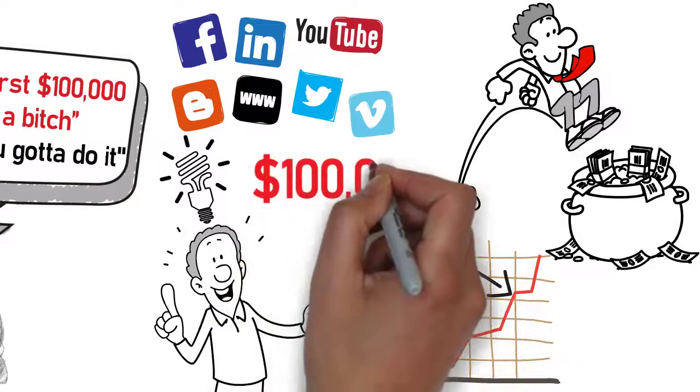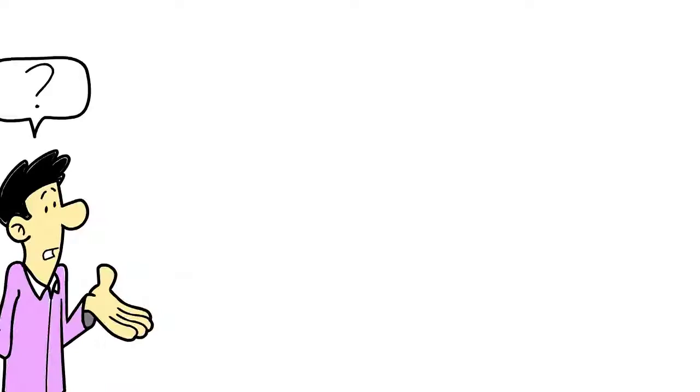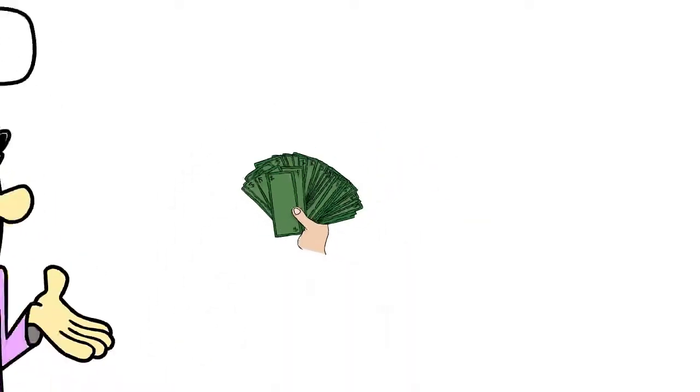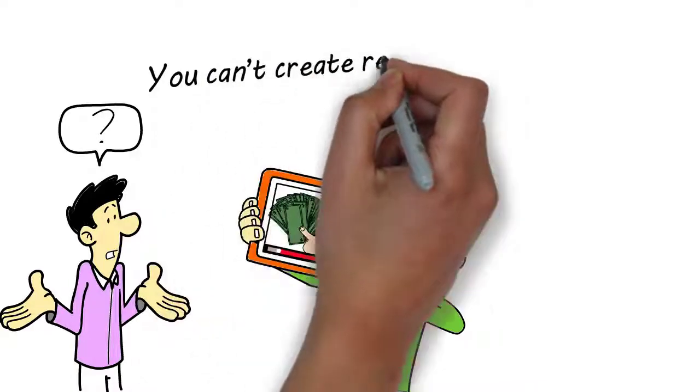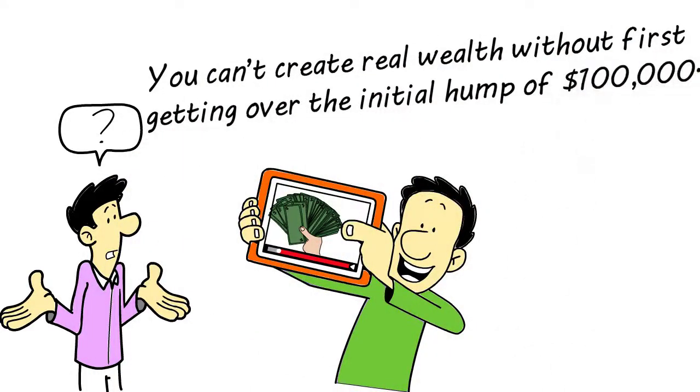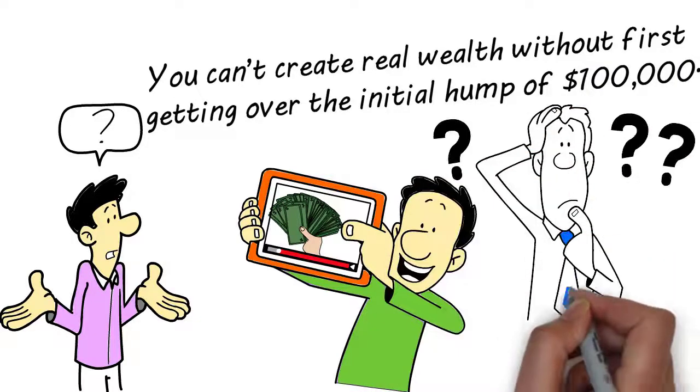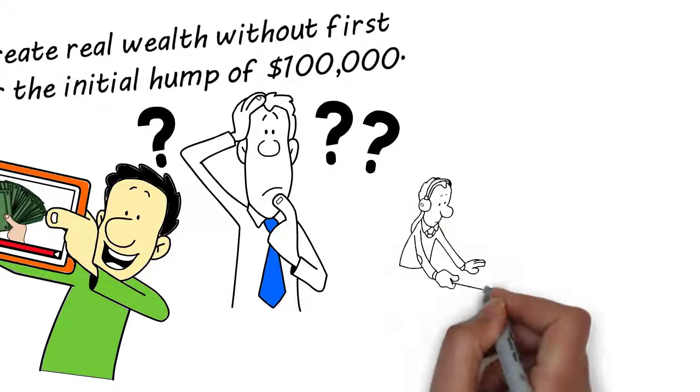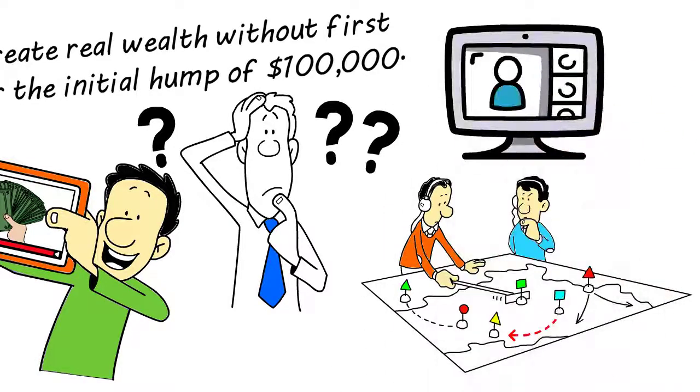In other words, if you want to become rich, you need to cross that one hundred thousand dollar mark sooner than later. But you probably have no plan to do that. If your goal is to create wealth, then you have to watch this video. You can't create real wealth without first getting over the initial hump of one hundred thousand dollars. Most people have no concrete plan to get there, and without a plan it ain't happening. In this video I will give you that plan.